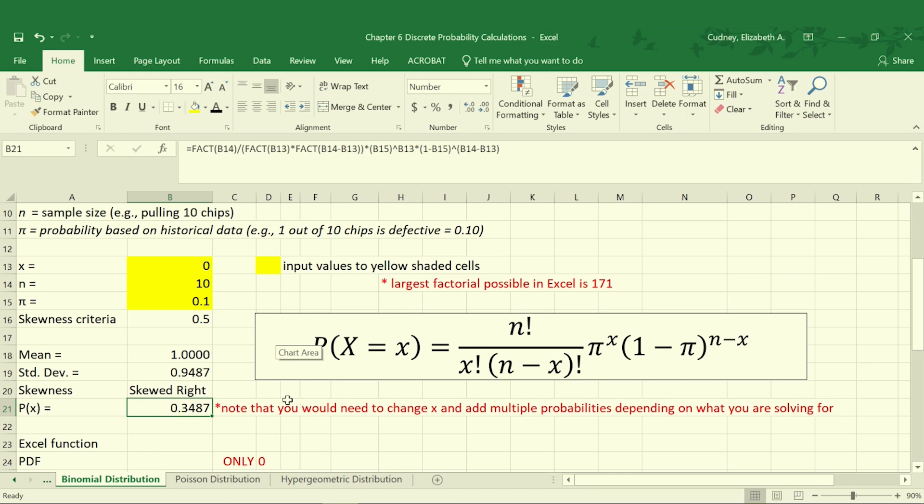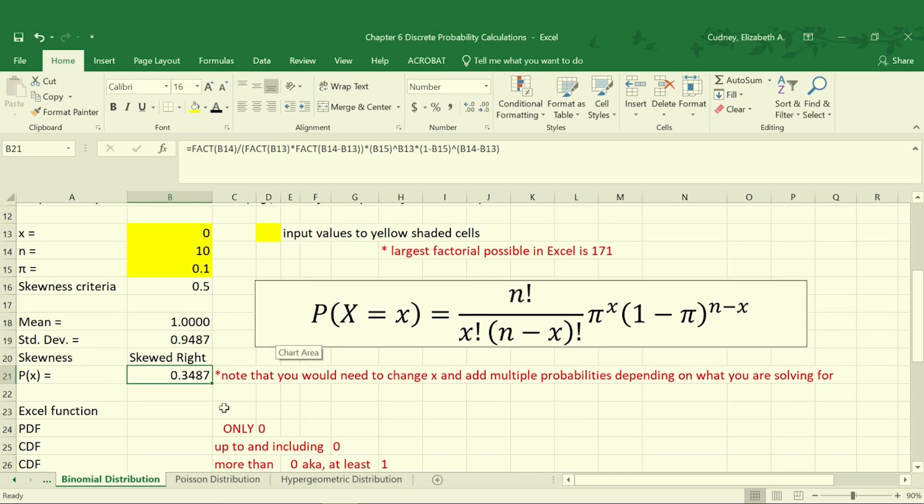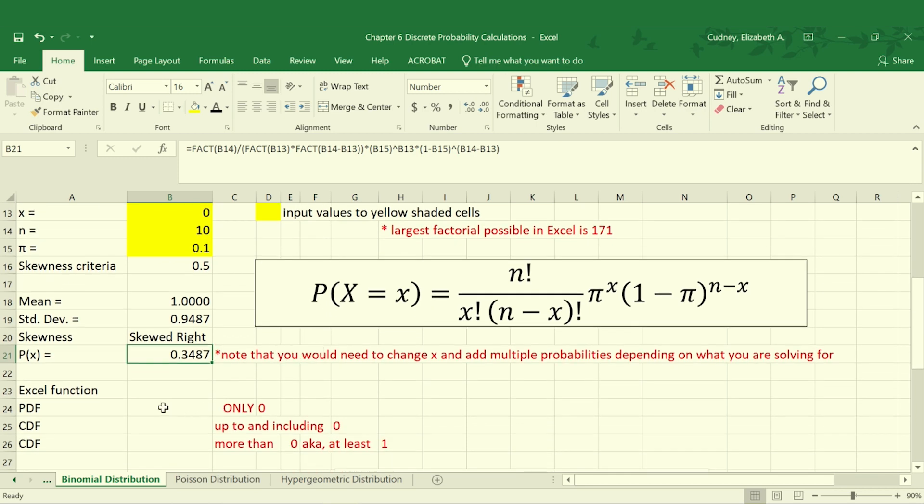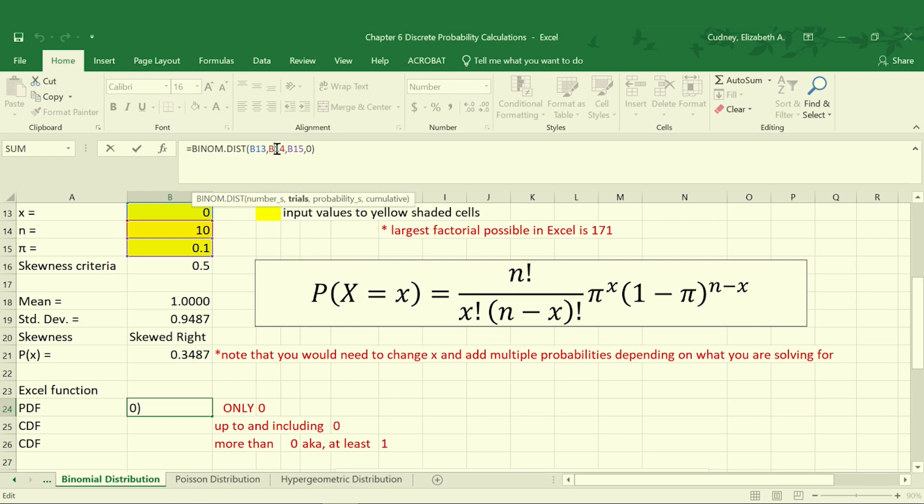We can also go through and use Excel functions to do these calculations. Within Excel there's a binom.dist function, and when we use that function and I click on it you can see the pieces that we have to add. With our binom.dist we start with our number which is our s which was our b13, our value that we're solving for. We were looking for 0 defects.